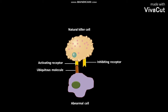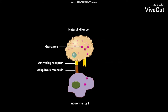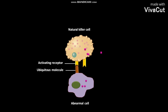The cytotoxic granules of the natural killer cell contain perforin and granzymes. The perforins are released from the cytotoxic granules of the natural killer cell and form pores on the plasma membrane of the abnormal cell. Through these pores, the released granules get access to the cytoplasm of the abnormal cell.